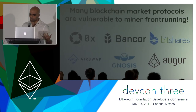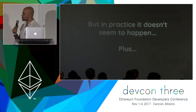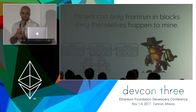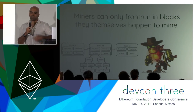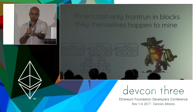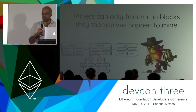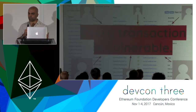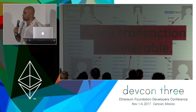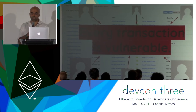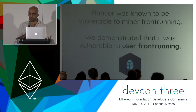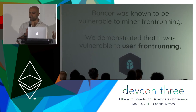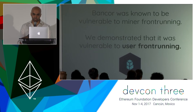Many blockchain market protocols are vulnerable to miner front running, but it doesn't seem to happen much in practice since miners can only front run in blocks they themselves happen to mine. However, if your protocol can be front run by random users, that's really bad — any user watching the blockchain can front run any transaction they want. Bancor was known to be vulnerable to miner front running, but we demonstrated it was vulnerable to user front running, meaning any user on the network could front run Bancor transactions and make money.